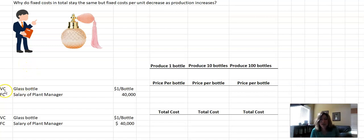For the variable cost of the glass bottle, which is $1 per bottle, if we produce one bottle, the price per bottle is $1. If we produce 10 bottles, the price per bottle is still $1. And if we produce 100, it is still $1. But let's look at the plant manager's salary.